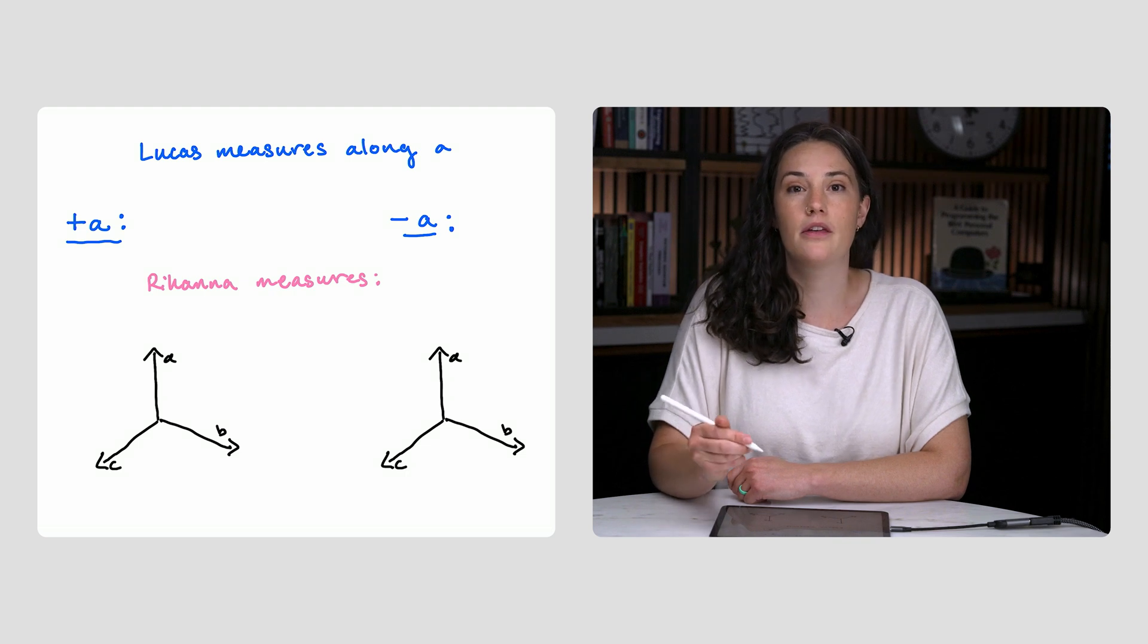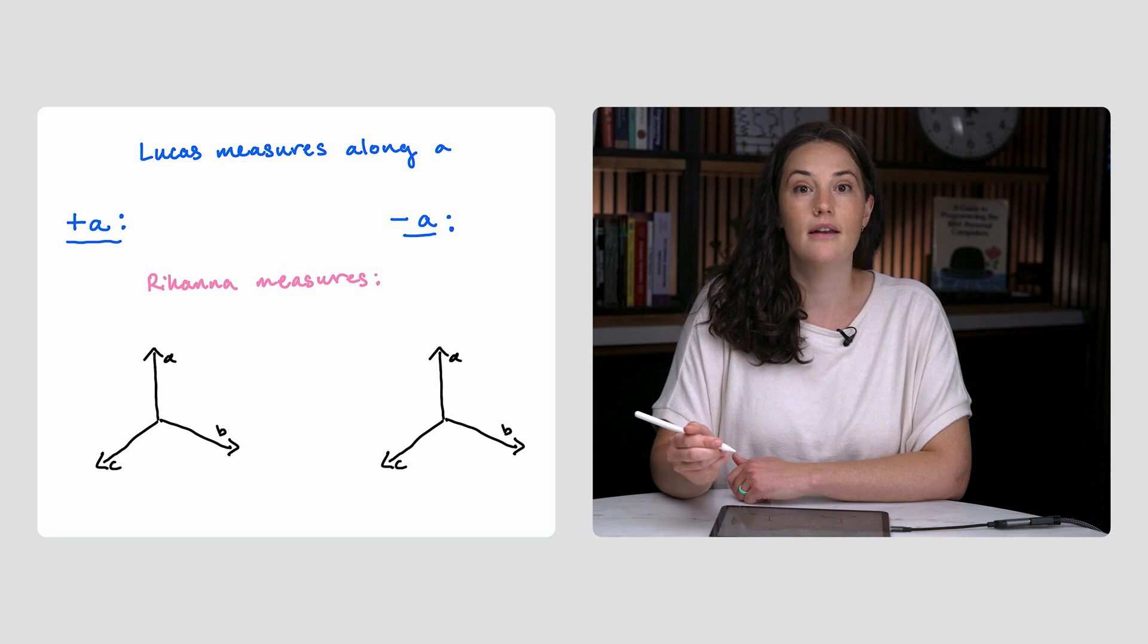But we want the probability that Rihanna measures the same sign as Lucas along any axis of her choosing, not just A.